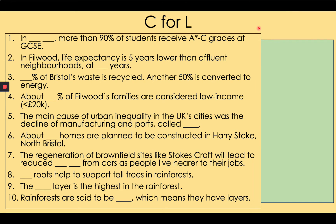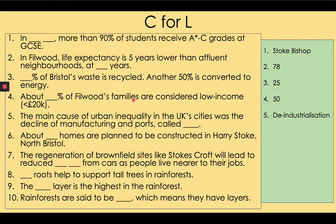Question 1: In Stoke Bishop more than 90% of students receive A* to C grades at GCSE, now 9 to 5 grades. Question 2: In Fillwood life expectancy is 5 years lower than affluent neighbourhoods, at 78 years. Question 3: 25% of Bristol's waste is recycled, another 50% is converted to energy. Question 4: About 50% of Fillwood's families are considered low income — a family defined as mother, father and two children. Question 5: The main cause of urban inequality in the UK's cities was the decline of manufacturing and ports, called deindustrialisation. Question 6: About 3,200 homes are planned to be constructed in Harry Stoke, North Bristol.